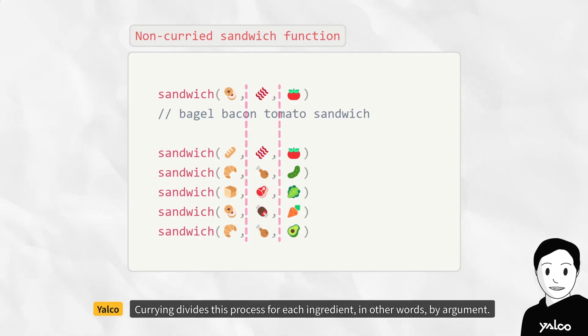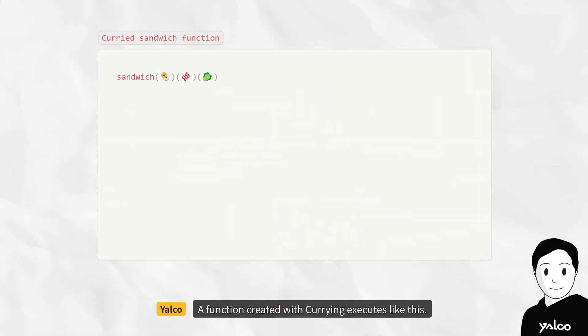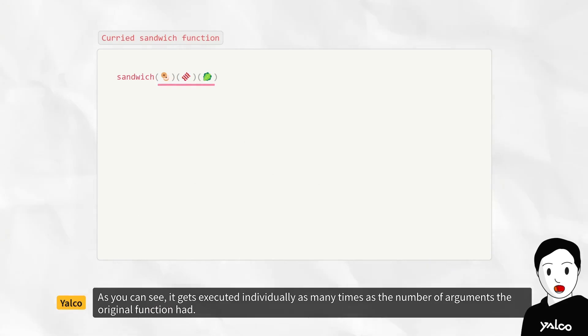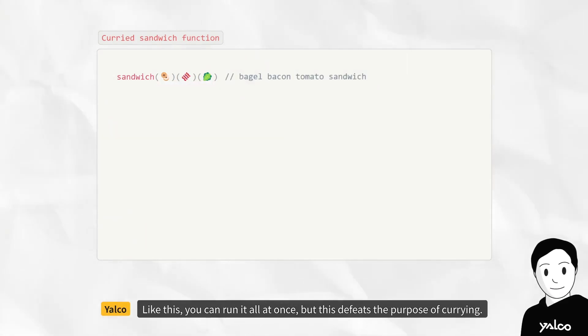Currying divides this process for each ingredient, in other words, by argument. A function created with currying executes like this. As you can see, it gets executed individually as many times as the number of arguments the original function had. Like this, you can run it all at once, but this defeats the purpose of currying.